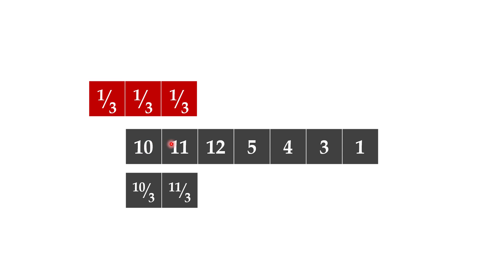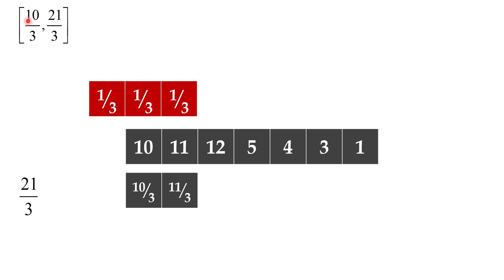Now let's go to the next step, where we slide this vector one block to the right. In this step, we don't have a value on one side, but we have values here. So 10 times one-third is 10 divided by three, and 11 times one-third is 11 divided by three. If you sum these values, you get 21 divided by three, and we append that to the list. This is the value for step one and this is the value for step two.